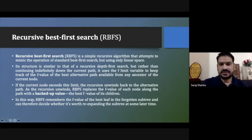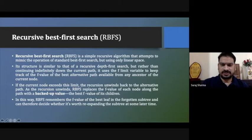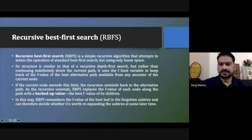Recursive Best First Search is a simple recursive algorithm that attempts to mimic the operation of a standard best first search but uses linear space. Its structure is similar to recursive depth first search — just like depth first search but in a recursive way.